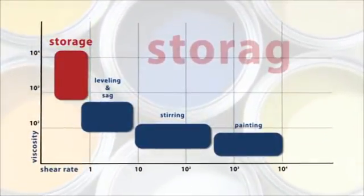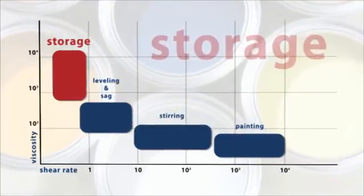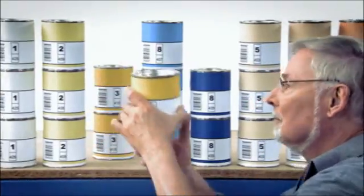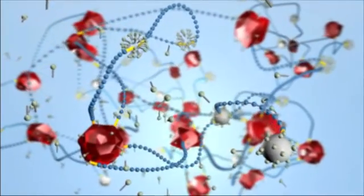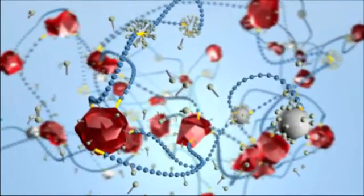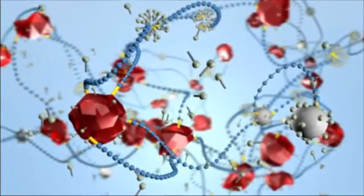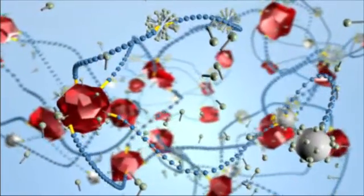A high viscosity is required during storage and transport to prevent the sedimentation of pigments and fillers. The thickener prevents settling at low shear stress conditions, for example gravity, by means of its stabilizing associative network.